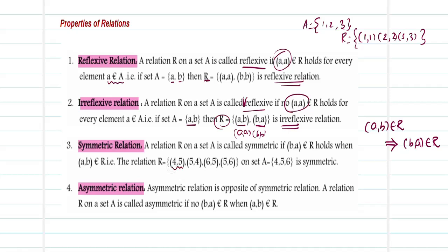I have (4,5). If I have (4,5), then (5,4) must also be inside — is (5,4) inside? Yes, it is. If (5,4) is inside, its flip (4,5) must also be inside — yes, it is. If (6,5) is inside, its flip (5,6) must also be there — yes. If (5,6) is present, its flip (6,5) must also be present. So all the possible combinations are here. Hence, I call the relation to be symmetric.